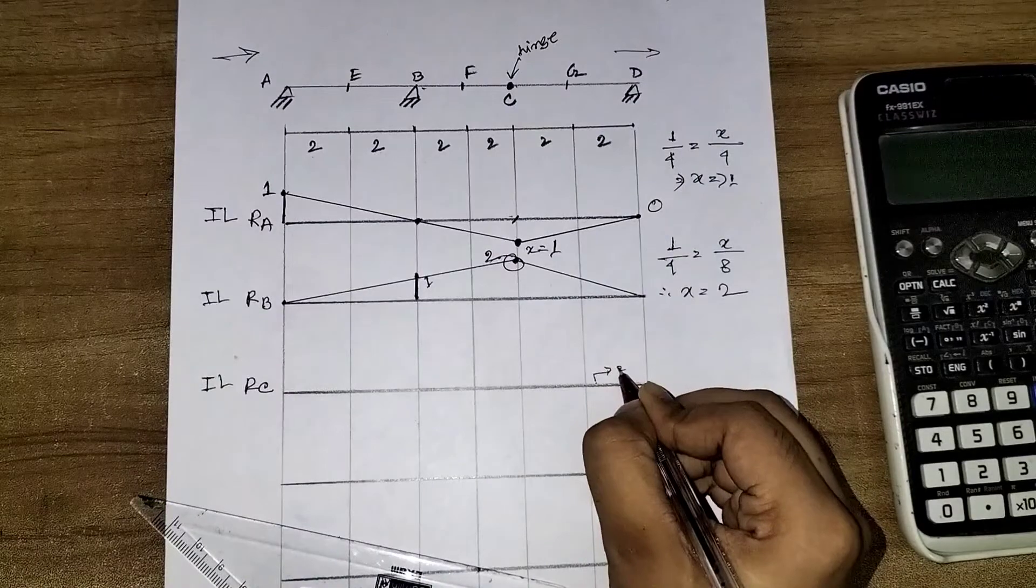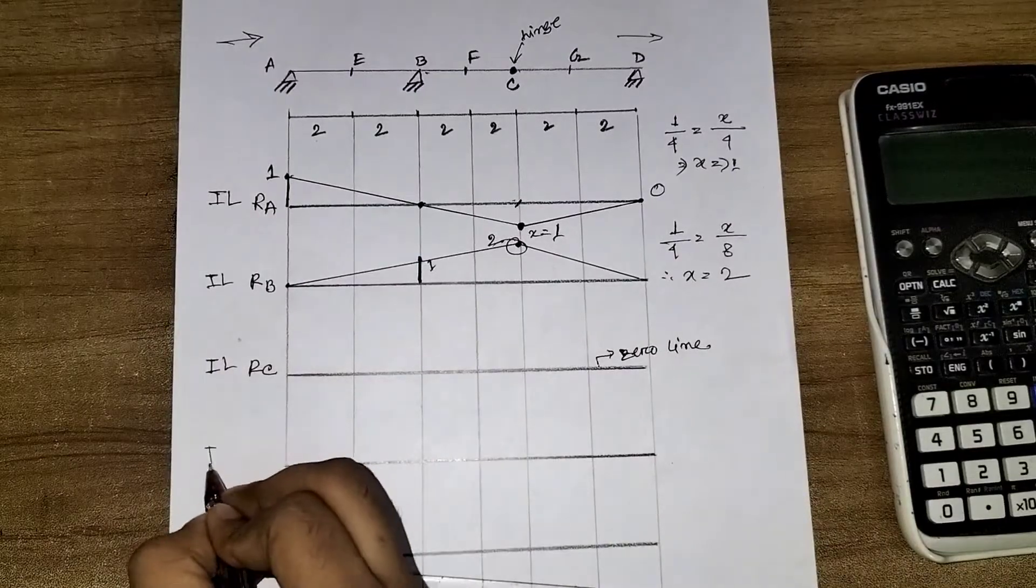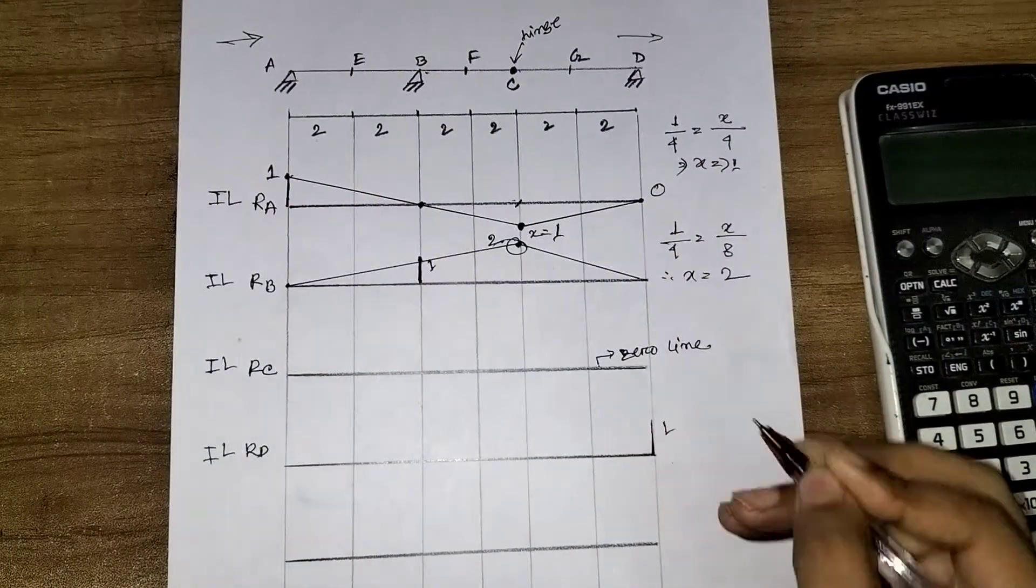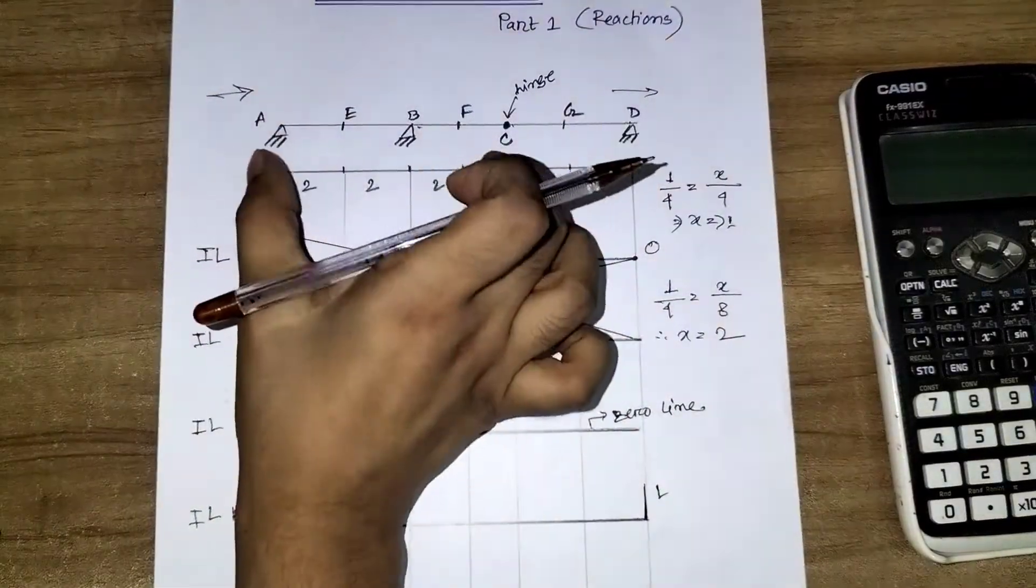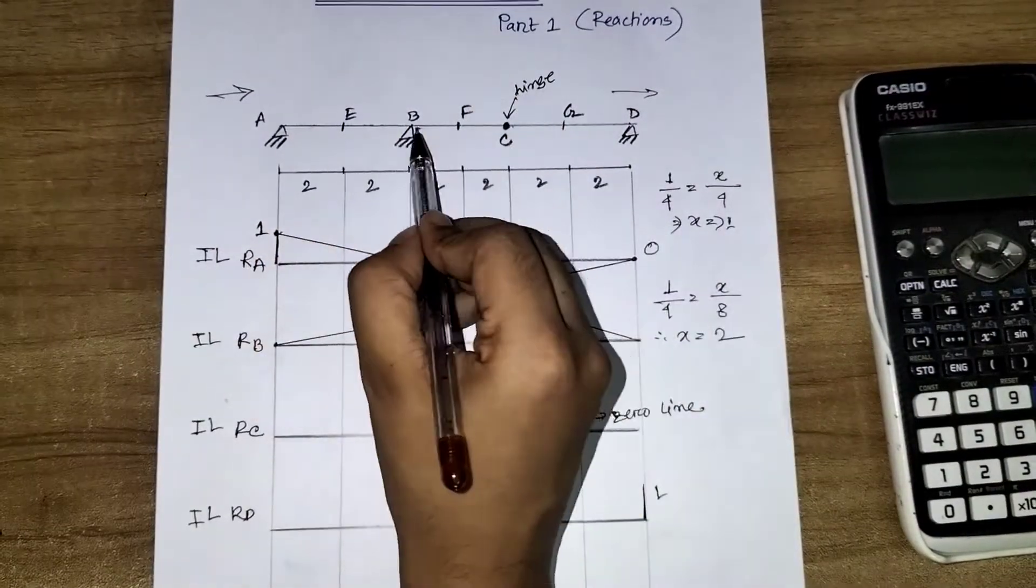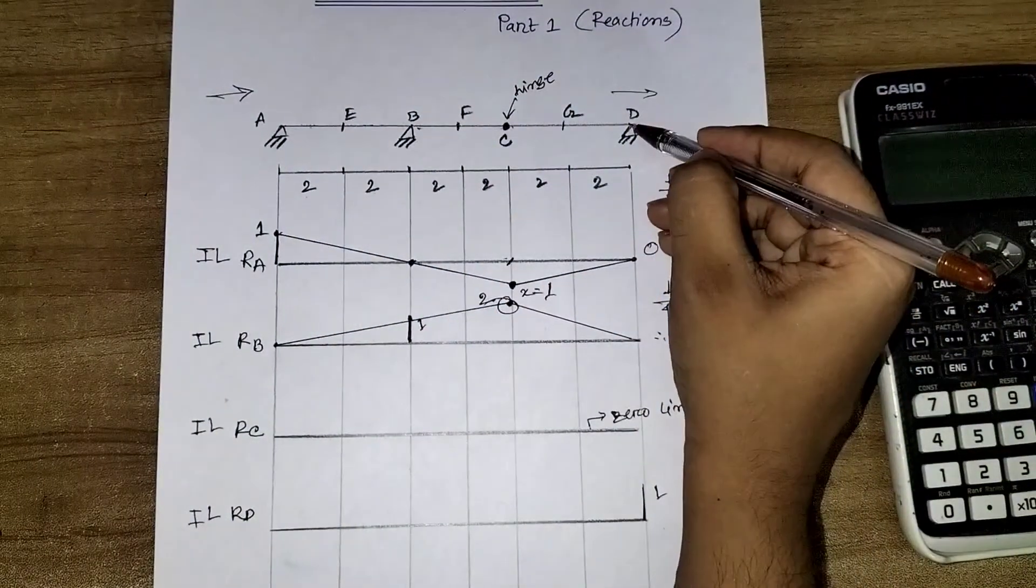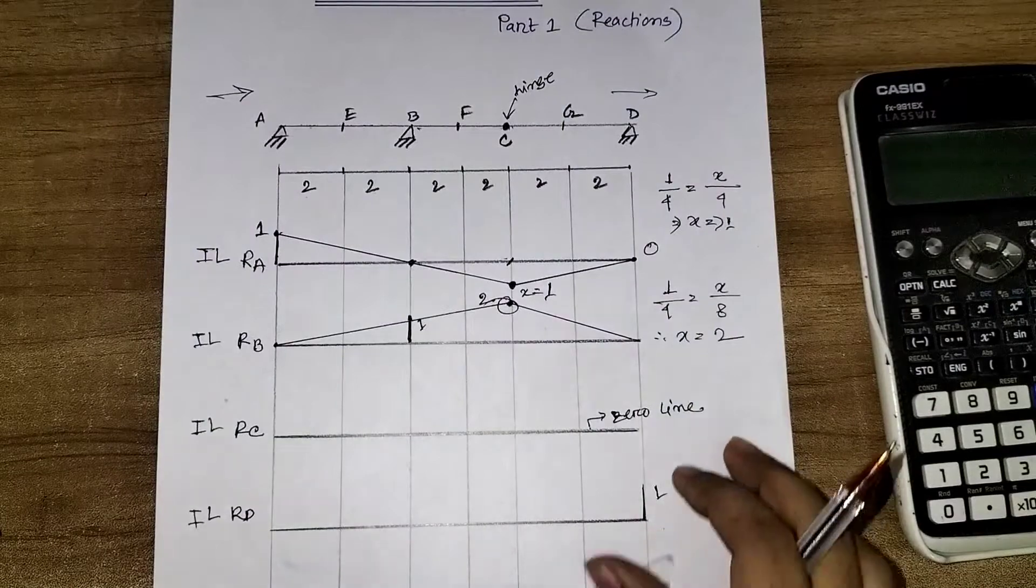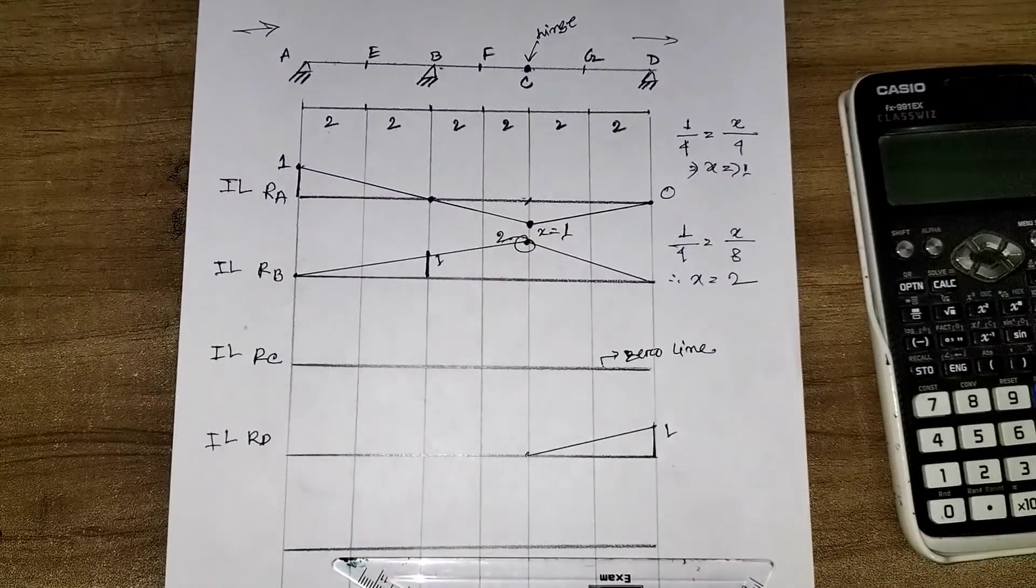So this will be a zero line. Then RD is a one unit load. The AC part is a stable part because it has a hinge. So when there is no movement at AC, there will be no reaction at D from the unit load. From C port, it will move upward, so C will be neutralized. If this is clear, then I will proceed to the next one.